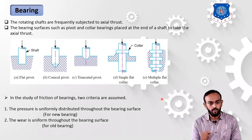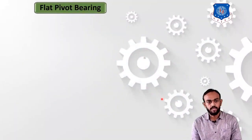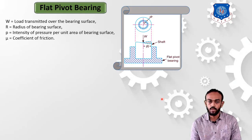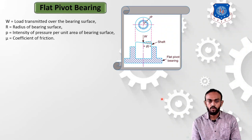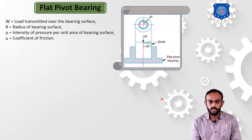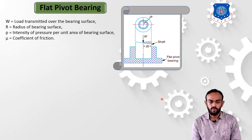For the flat pivot bearing, the flat surface is at the bottom of the shaft in common contact. First, understand the terminology: W is the load transmitted over the bearing surface — the vertical shaft is there and total load applied is W. R is the radius of that shaft. P is the intensity of pressure per unit area of the bearing surface — pressure equals force divided by area. And mu is the coefficient of friction.